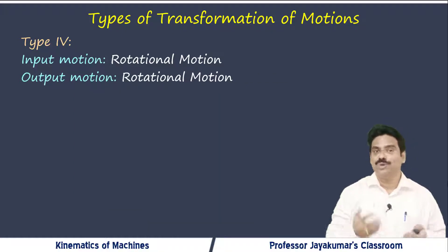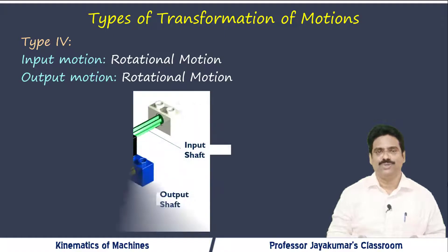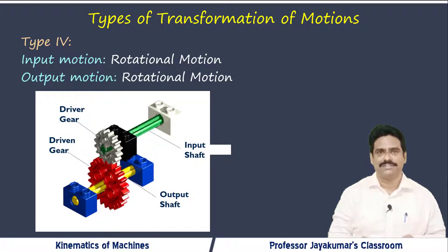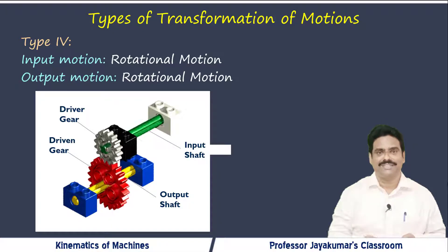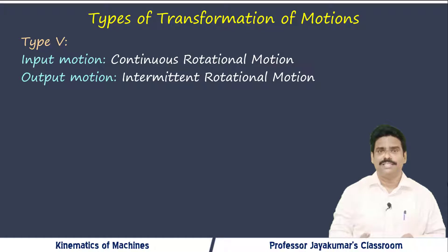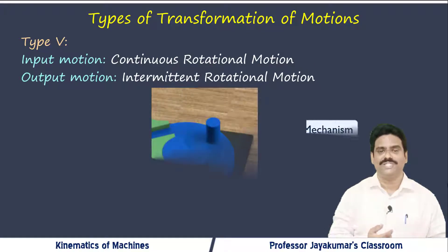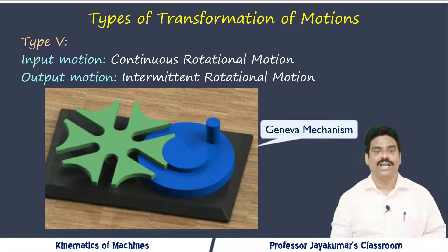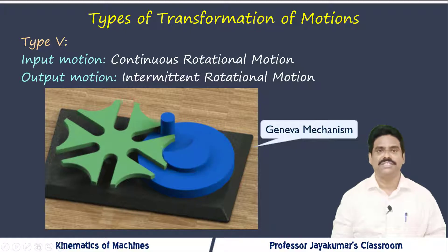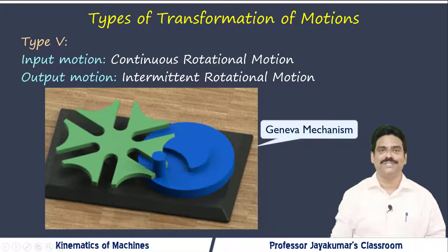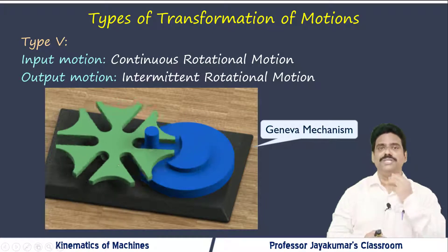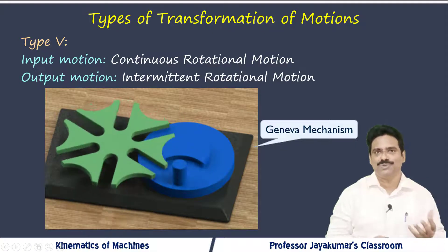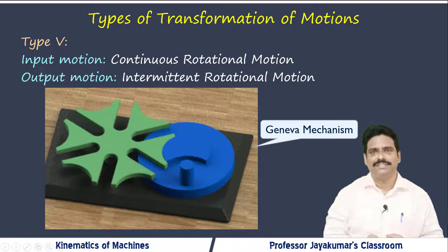In type III, there is continuous rotational input but the required output is angular oscillation — as in an oscillating cam follower mechanism, where the continuously rotating element is a cam which produces oscillating motion of the follower. In type IV, both input and output are continuous rotational motions, perhaps at different speeds, achieved using gears, gear trains, or belt drives with pulleys of various diameters. Finally, in some cases the input is continuous rotational motion but the output is intermittent rotational motion — a typical example is the Geneva mechanism.